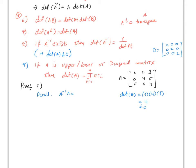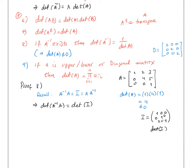Recall that for an orthogonal matrix, A^T times A equals the identity matrix. So det(A⁻¹ · A) equals det(I). Since I is a diagonal matrix, det(I) = 1. By property 6, det(A⁻¹ · A) = det(A⁻¹) times det(A). Therefore det(A⁻¹) equals 1 over det(A).